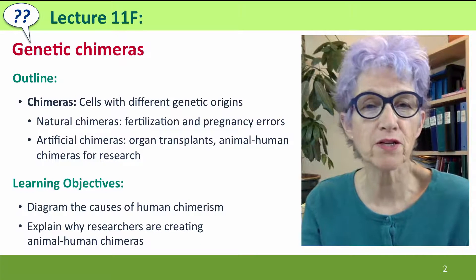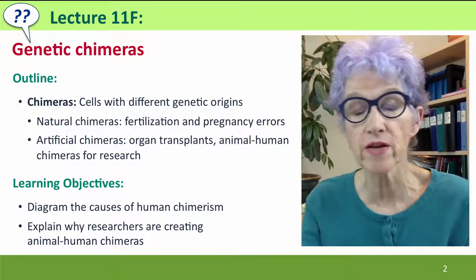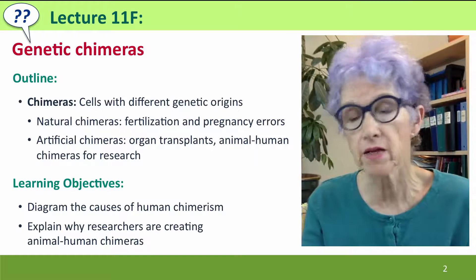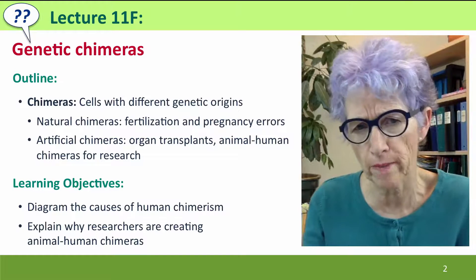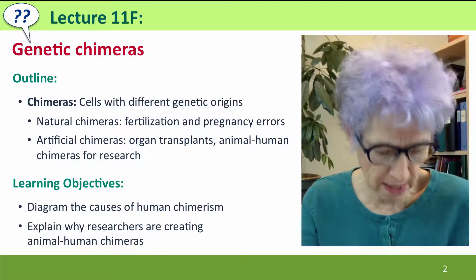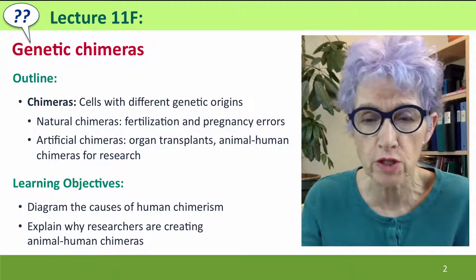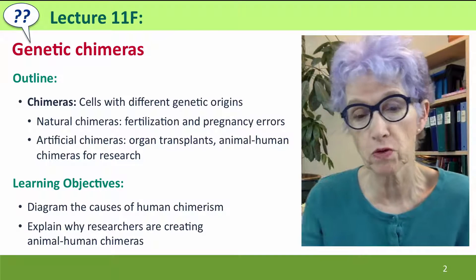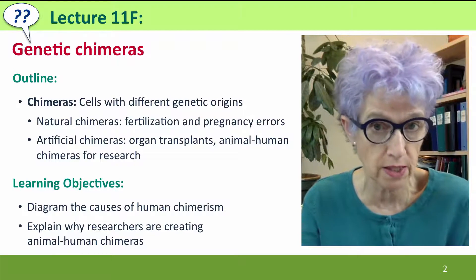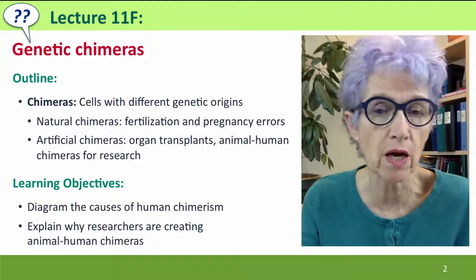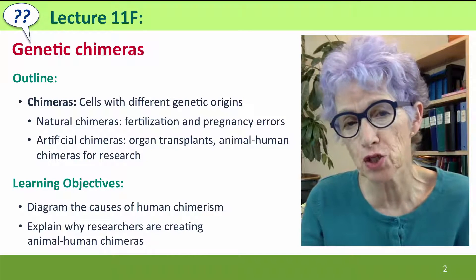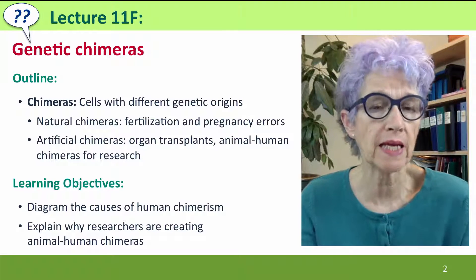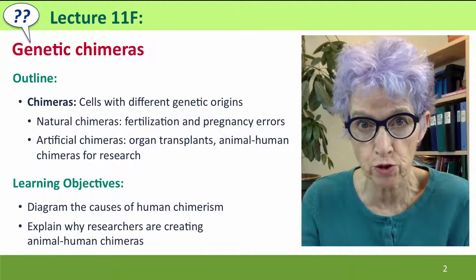Hi, everyone. Welcome back to Useful Genetics. This is Lecture 11F, where we're going to talk about genetic chimeras, and in the next lecture, microchimeras. We'll define chimeras — cells that have different genetic origins but live in the same organism — and talk about the processes by which natural chimeras arise and artificial chimeras created as a side effect of organ transplants and deliberately in experimental animals for research purposes.